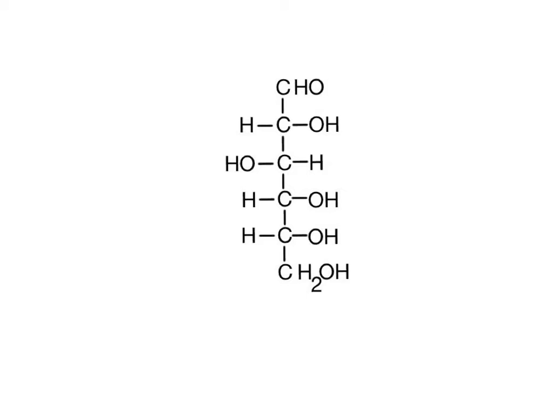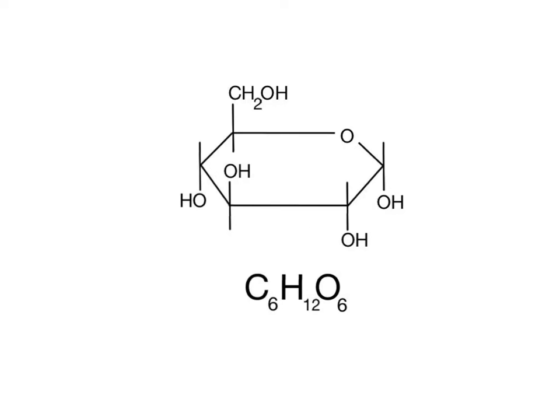Monosaccharides can be visually represented in a couple of ways. One way is to draw them as a straight chain of carbon atoms, like glucose shown here. But monosaccharides are usually shown in their simplified ring structures, because they normally form into rings when in aqueous solutions.